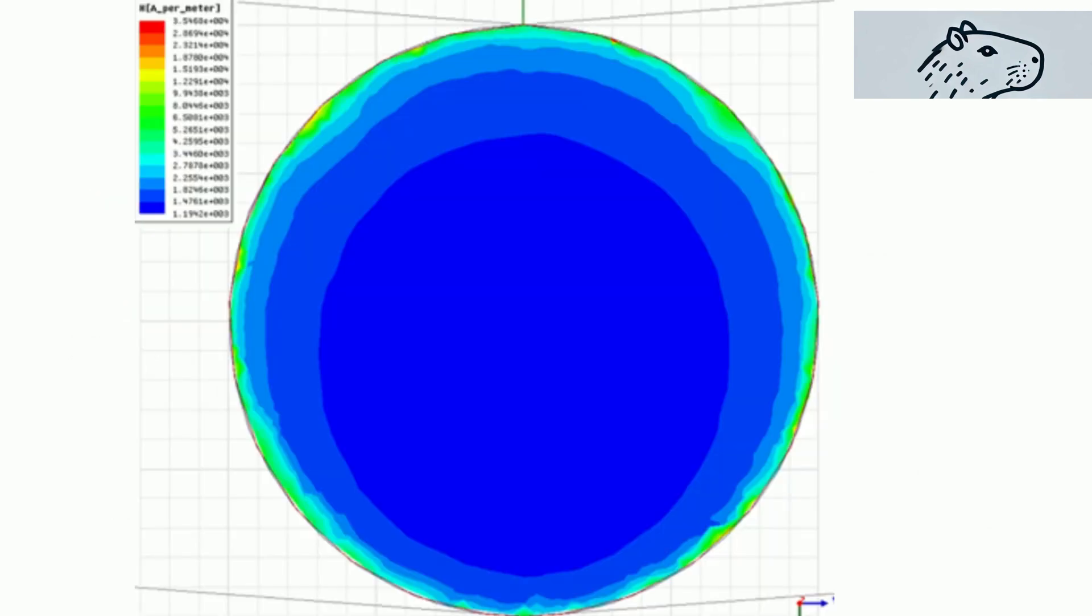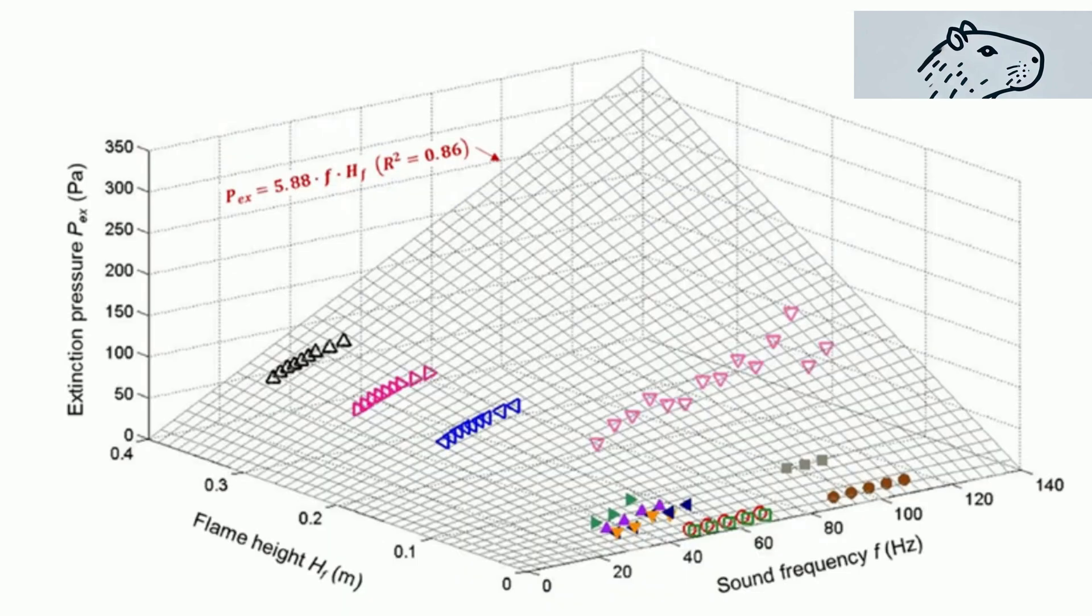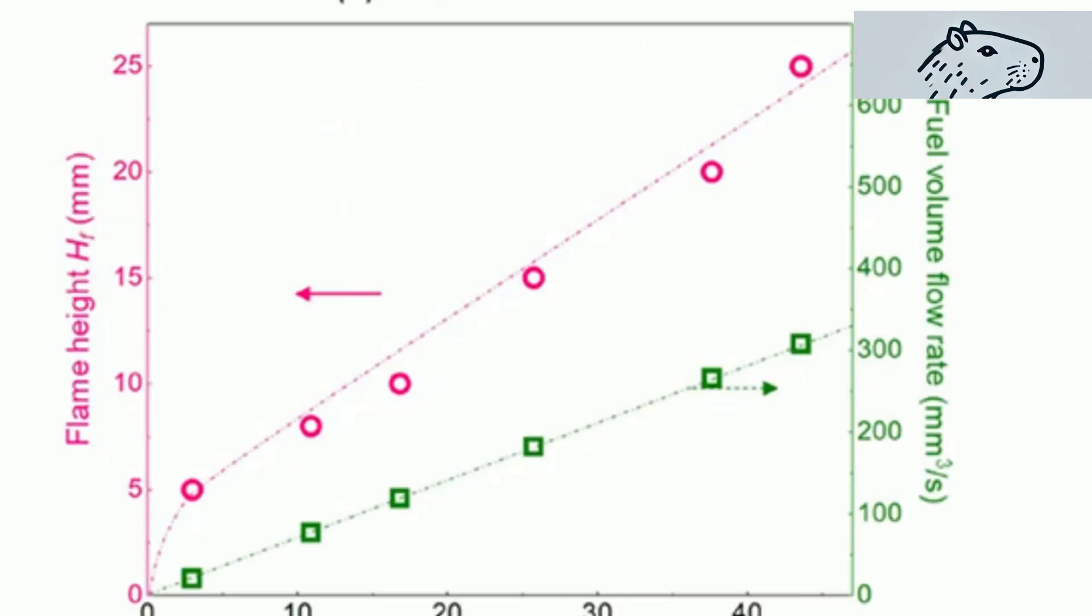Through our detailed COMSOL simulations, we visualize how varying sound frequencies and intensities affect flames of different types. These simulations help you understand the complex interplay between sound and fire, and how these interactions can be optimized for maximum fire suppression.